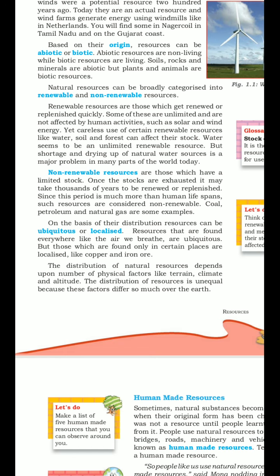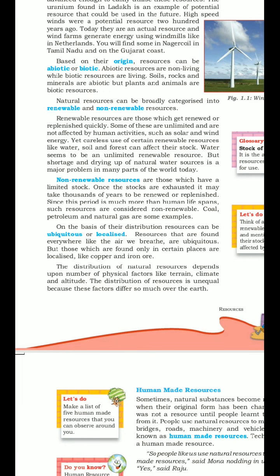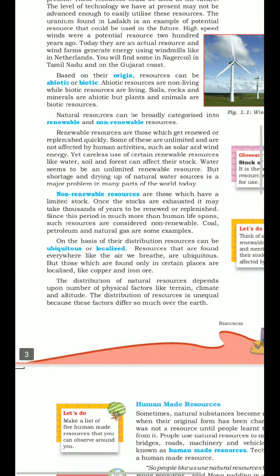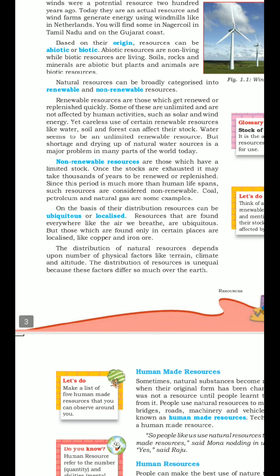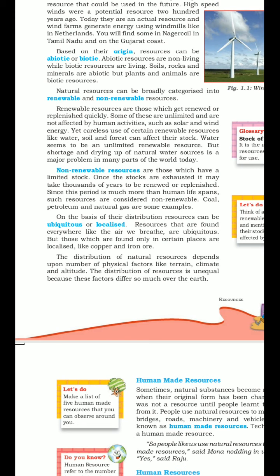On the basis of their distribution, resources can be ubiquitous or localized. Resources that are found everywhere — like air and water — are ubiquitous resources. But those which are found only in certain places are localized. Examples of localized resources are copper and iron ore. The distribution of natural resources depends upon a number of physical factors like terrain, climate and altitude.